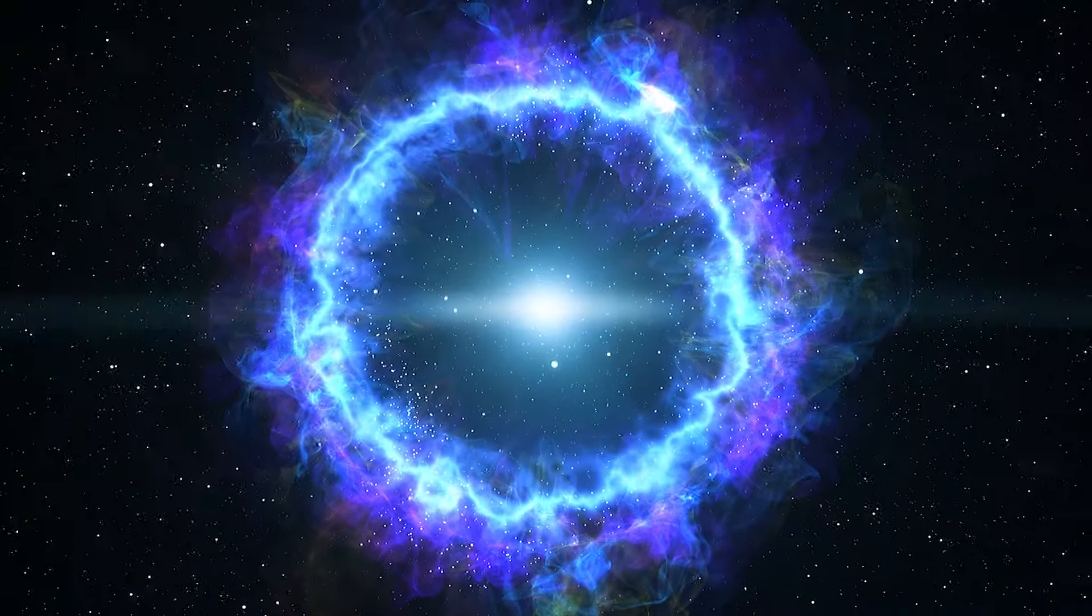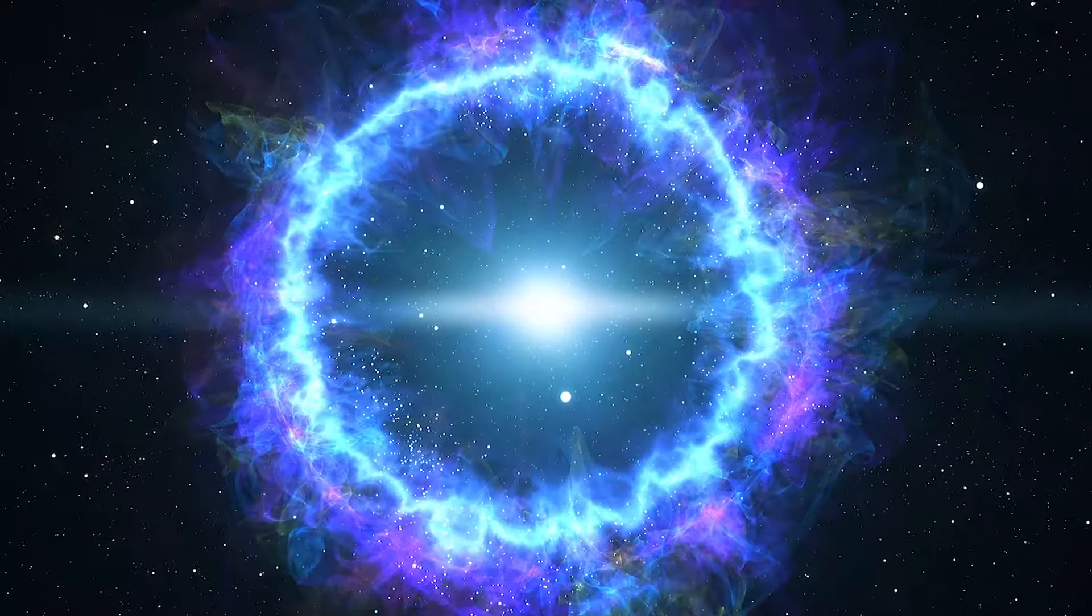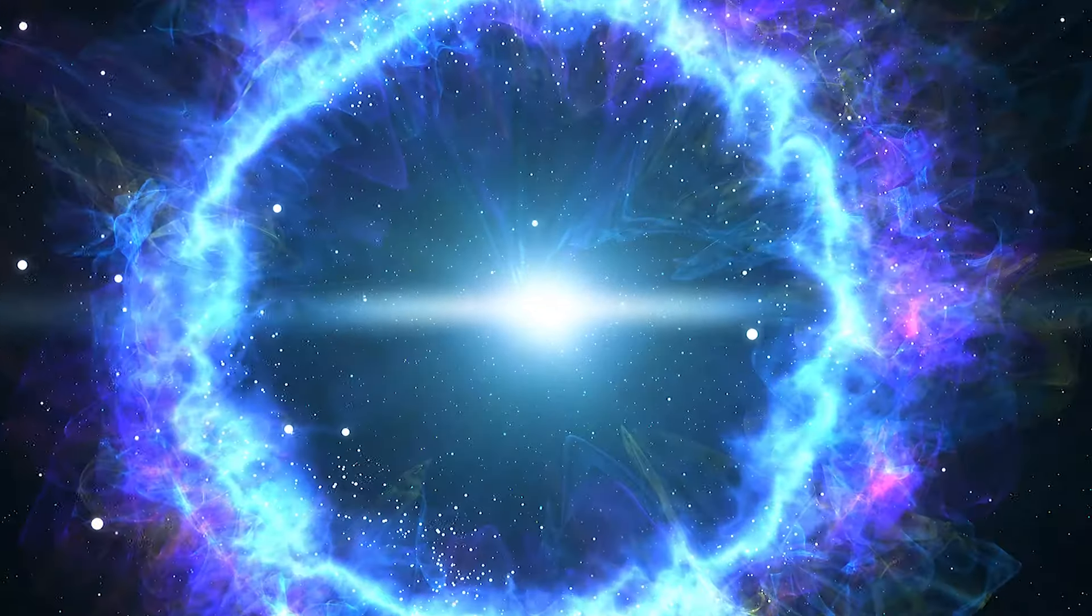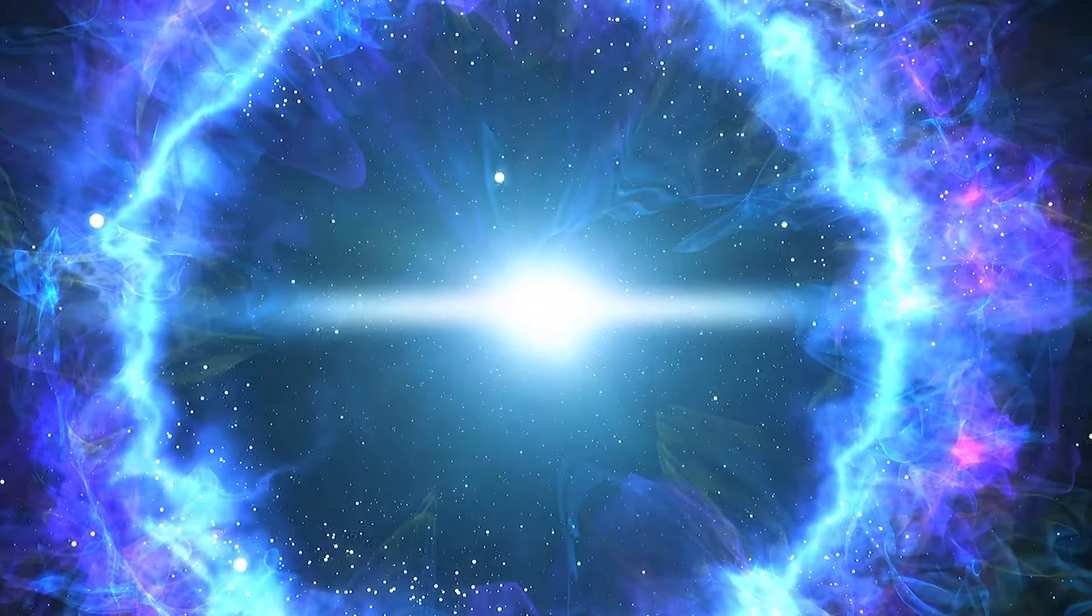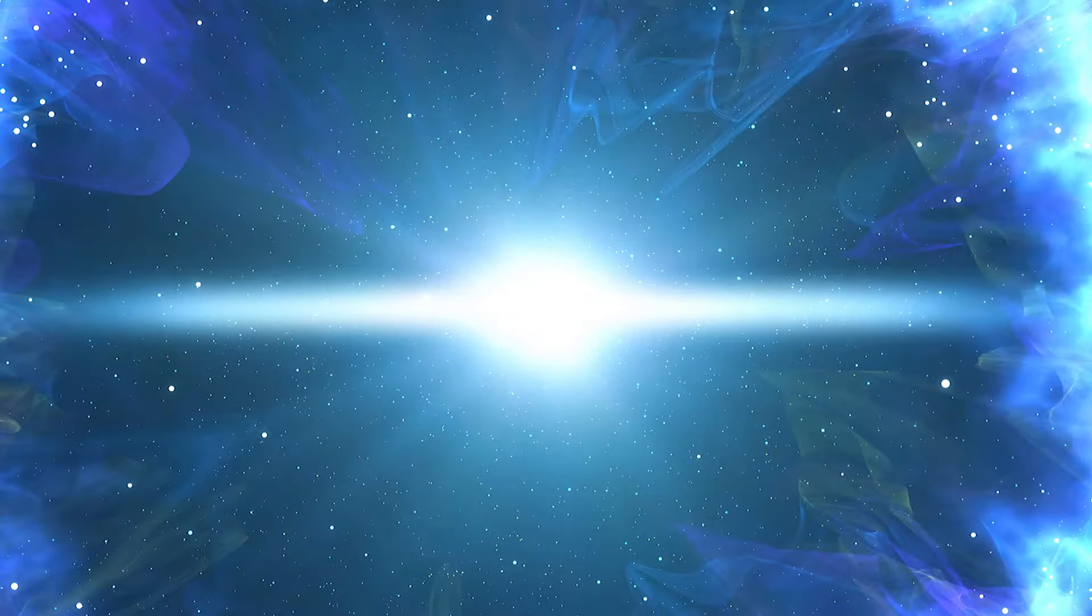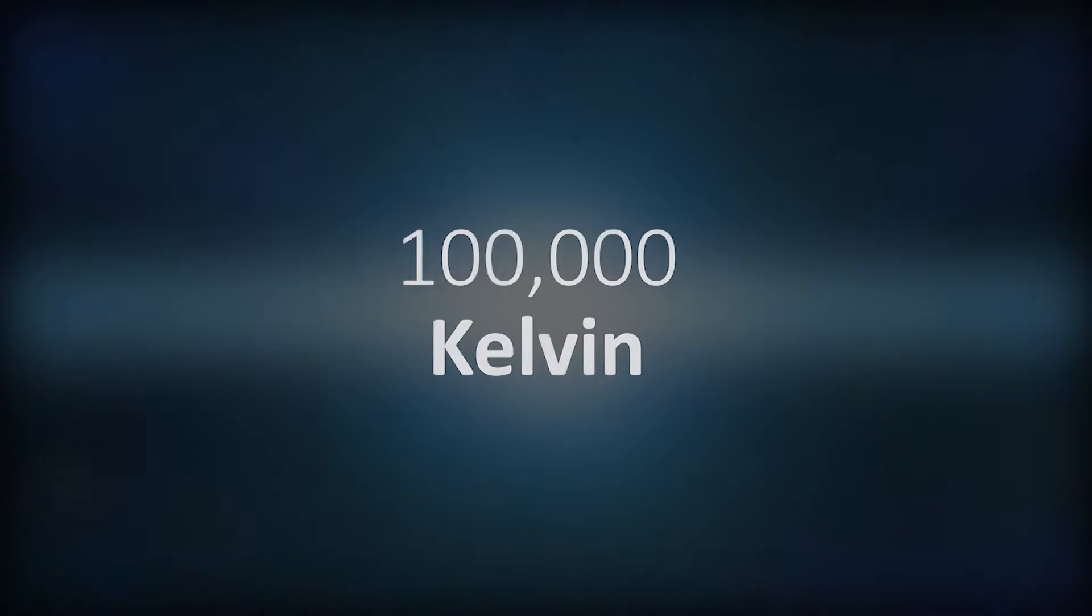After the outward pressure from the fusion reaction stops, the star expels most of its outer material and creates a planetary nebula. What remains is the core of the star, which becomes a very hot white dwarf with a temperature over 100,000 Kelvin.